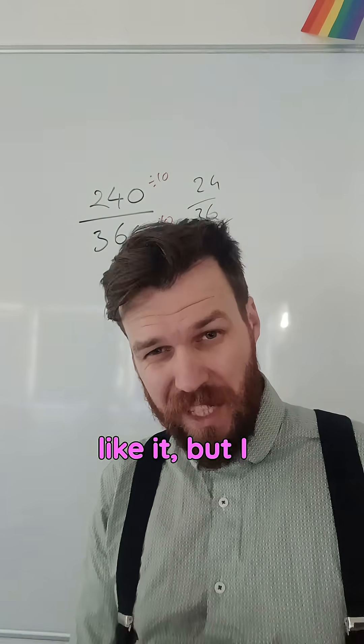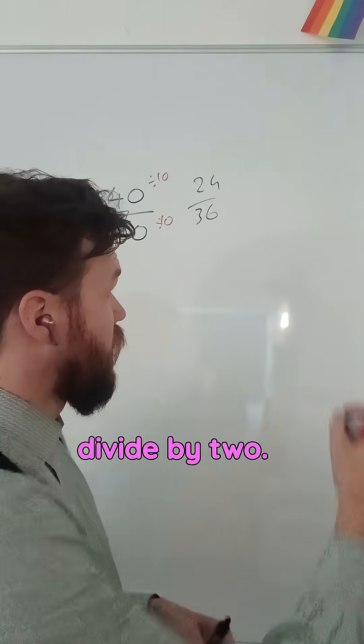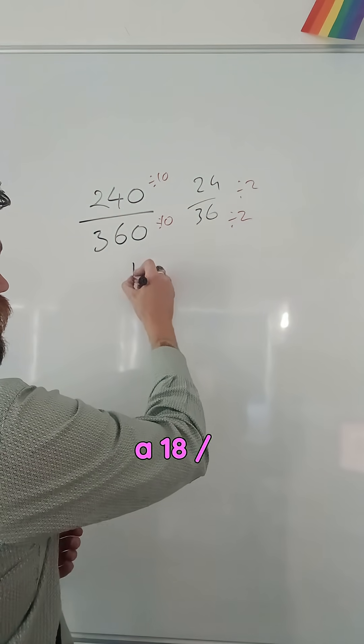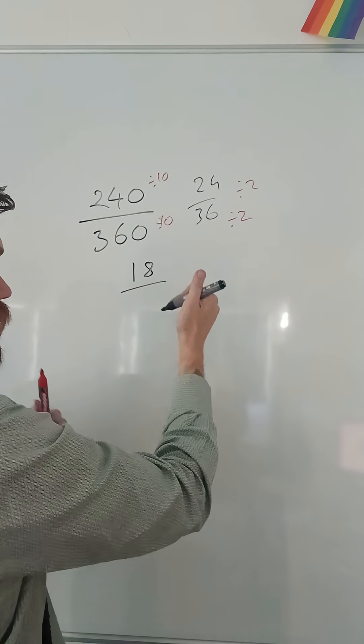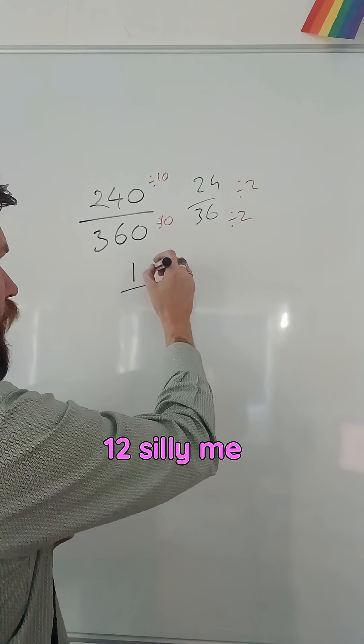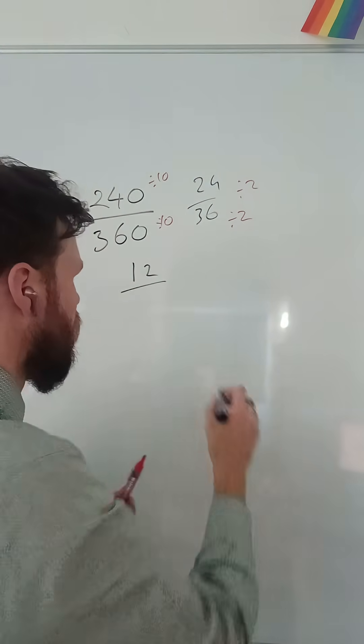24 over 36, still don't like it, but I can see that both of them are even, so I'm going to divide by 2. Top and bottom, numerator and denominator, and that's going to give me 18 over... 12, silly me, over 18.